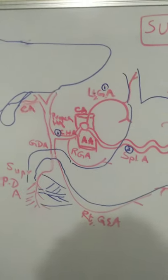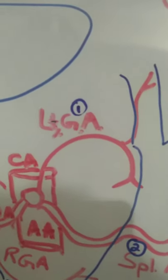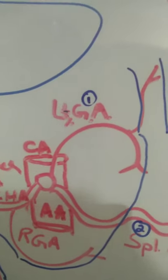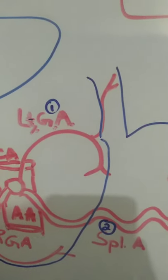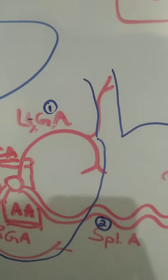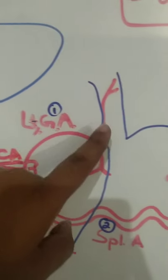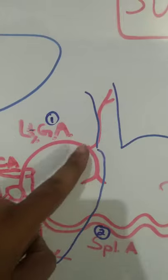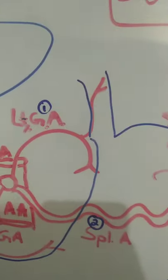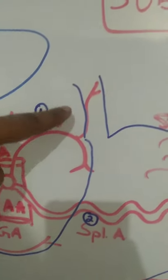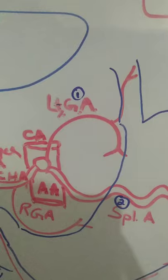The left gastric artery is the first branch of the celiac artery. It goes out to the left side and supplies the lesser curvature of the stomach. Using a mnemonic — just as a guest is honored with coffee, the esophagus is a guest for the stomach — this left gastric artery gives one branch to the esophagus, called the esophageal branch of the left gastric artery.